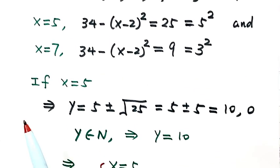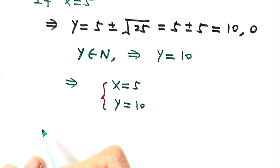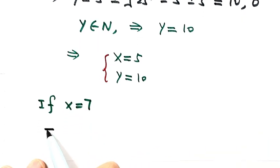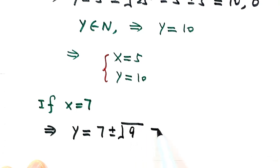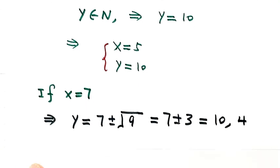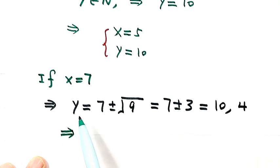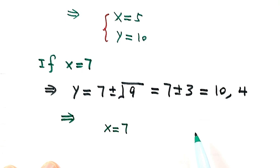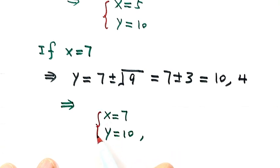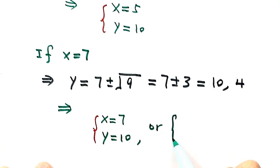Second case: if x = 7, then plugging into Equation 1, y = 7 ± √9 = 7 ± 3, which equals 10 or 4. So we have two solutions here: x = 7, y = 10, and x = 7, y = 4.